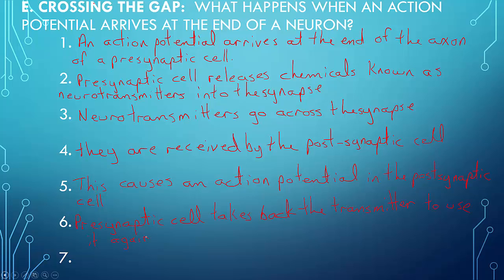The presynaptic cell takes back the neurotransmitter to use it again. Certain drugs can block that uptake, resulting in a continued excitement or action potentials of the postsynaptic cell.